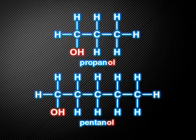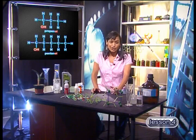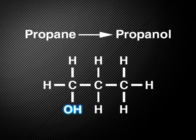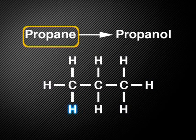Both of these molecules are alcohols: propanol and pentanol. Notice the OH functional group on each one. If you noticed that they all end with the letters OL, you'd be correct. Alcohols are named by changing the end of the backbone molecule from the letter E to the letters OL. In this case, the backbone molecule is propane. Propane consists of only carbon and hydrogen, but when one hydrogen atom changes to hydroxyl, we have an alcohol — so the name changes from propane to propanol.